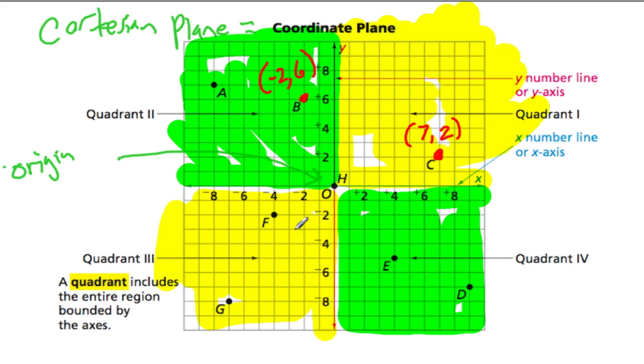And I said that quadrant one and quadrant three are inversely related. Quadrant one has all positive points, or quadrant three has all negative points. Let's look at this point G.